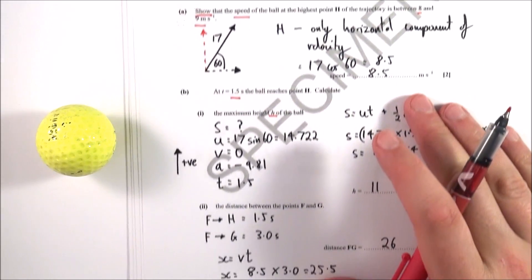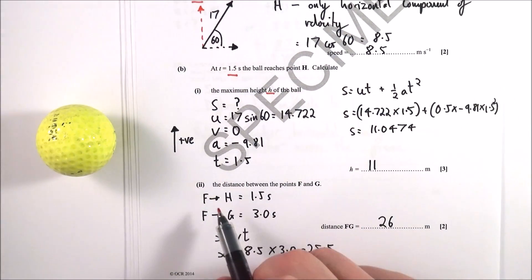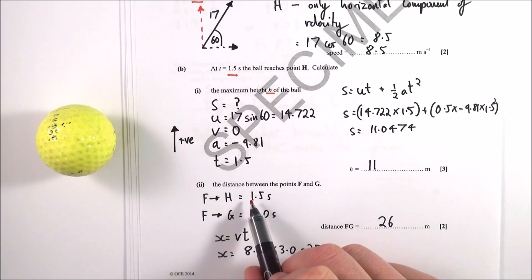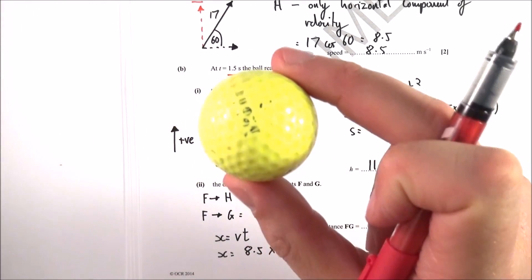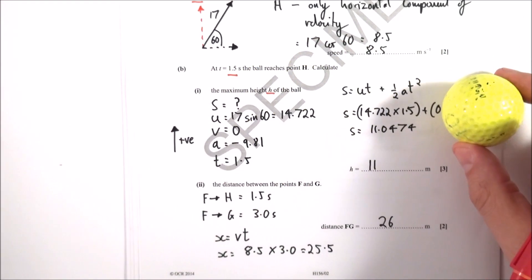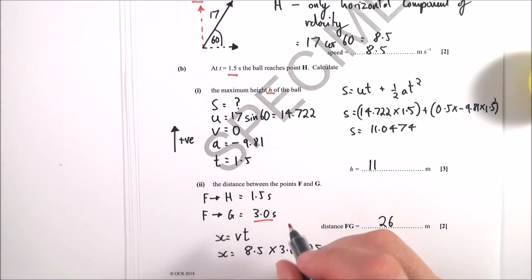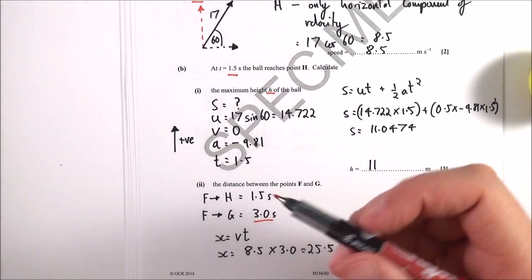When it comes to part two, to find the distance between points F and G, so this is the total distance that it travels, what I said was that basically between F and H it takes 1.5 seconds from the bottom to the very top, and that means it must take another 1.5 seconds from the top back down until it hits the ground, so the total time taken is equal to three seconds.